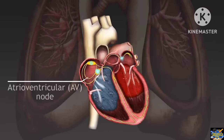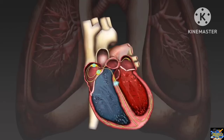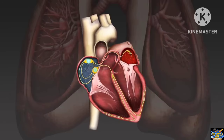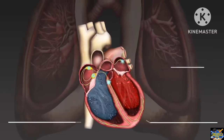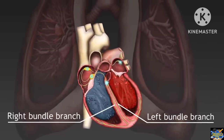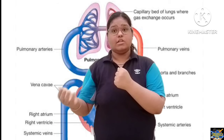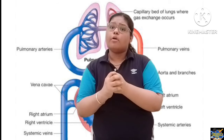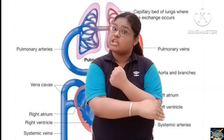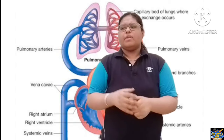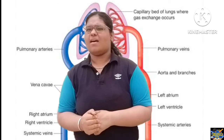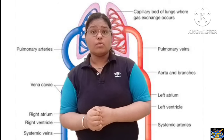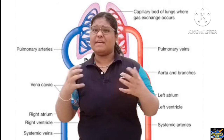Now let's talk about the veins and arteries. The veins carry blood towards the heart. Veins and arteries are both connected close to the heart. Veins carry deoxygenated blood towards the heart.